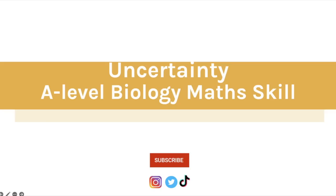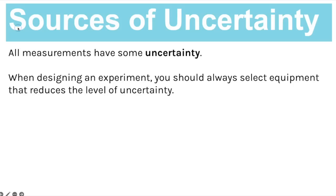If you need more help with A-level biology, don't forget to click subscribe because I upload videos every single week, and in exam season it's twice a week. For uncertainty in A-level biology, I'm going to go through the key things that come up in the practical handbook - I've also linked that in the description so you can have a look at it in more detail. The first thing is knowing what the sources of uncertainty are.